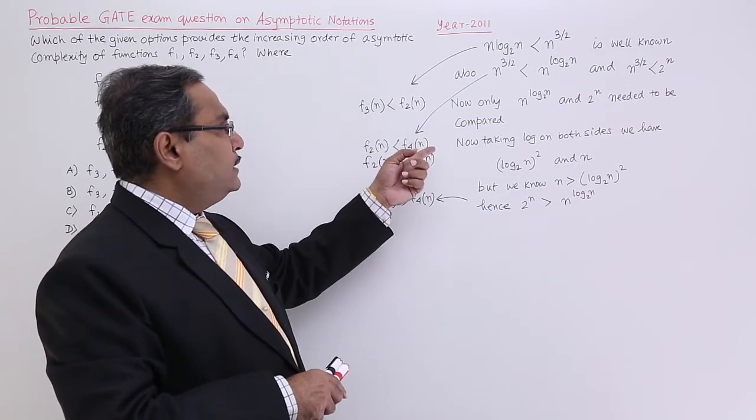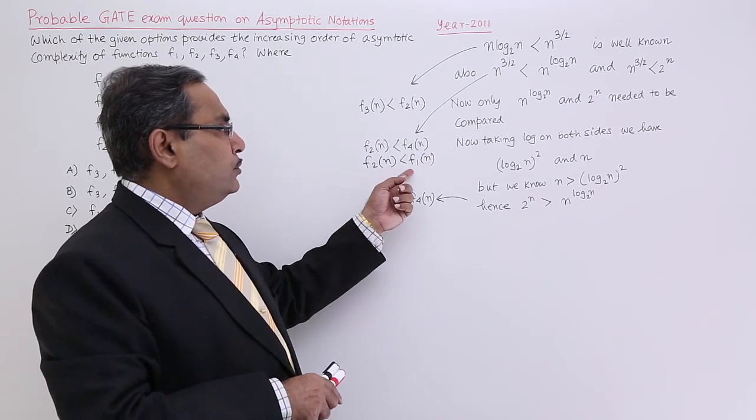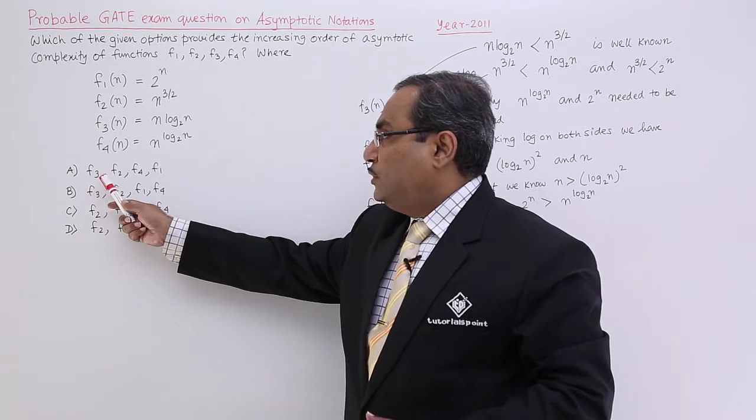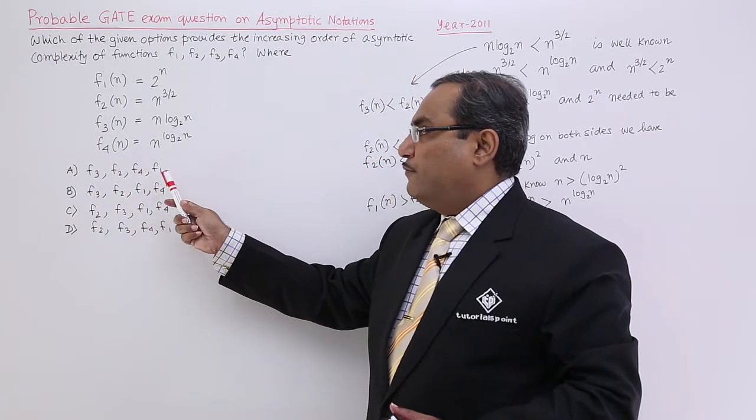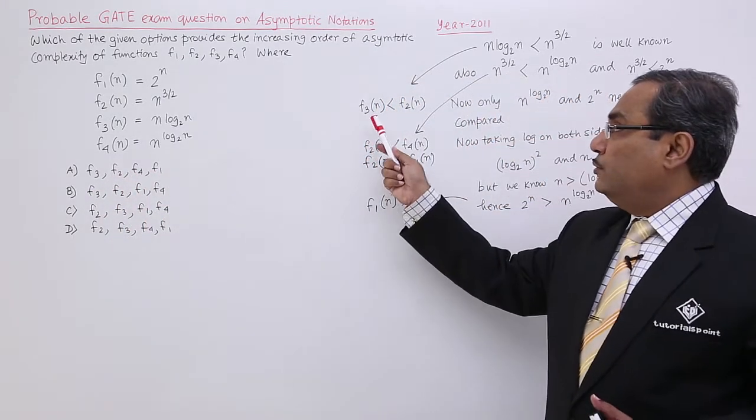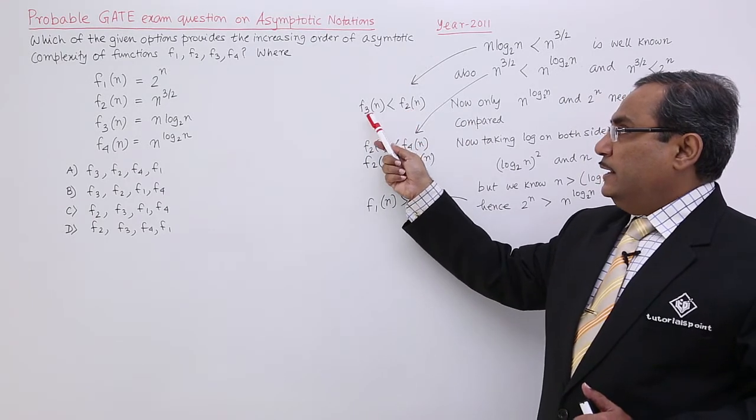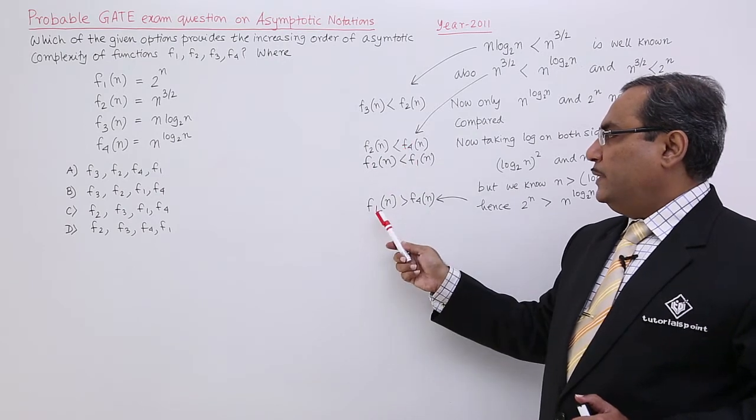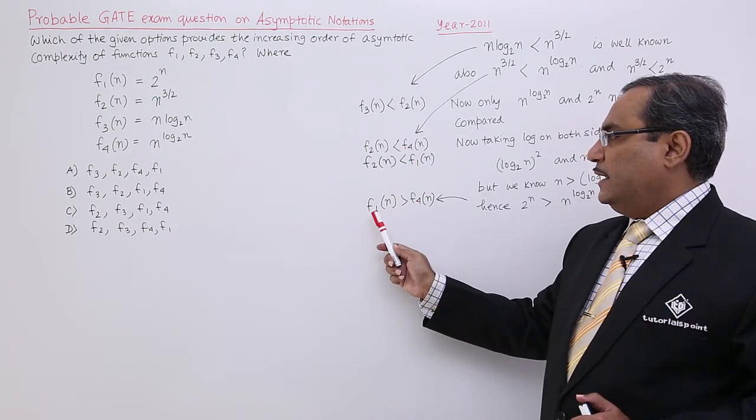Now we are having all these inequalities and also you know that f1 is greater than f4. So that means, we shall be having f3, f2, f4, f1 because already we know that f3, f2 in the increasing order they are okay and then we are having f2, f4 and also we are having f4 is lesser than f1.